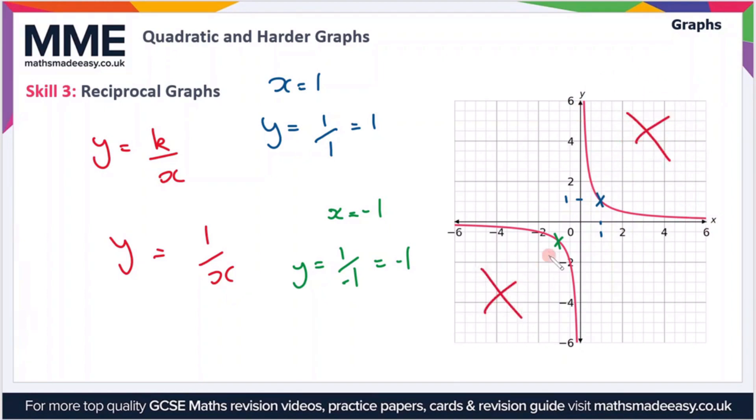In terms of the structure of the graphs, you should also be aware that these lines are asymptotes. So that means they get closer and closer to the axes but never actually touch.